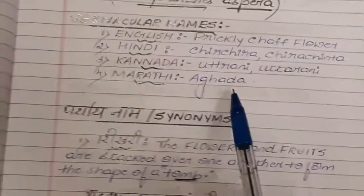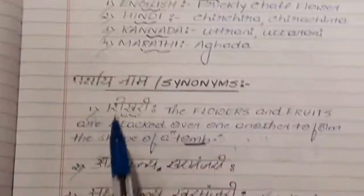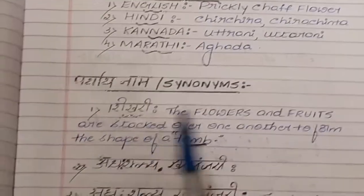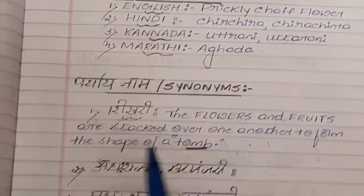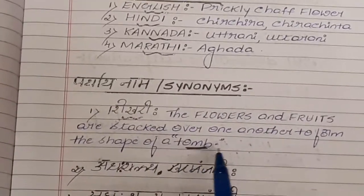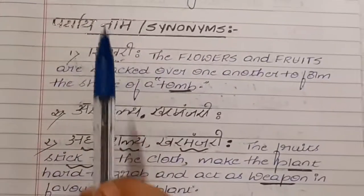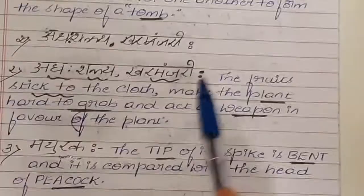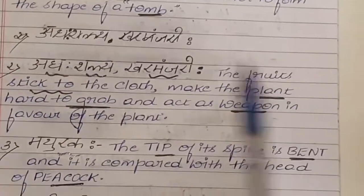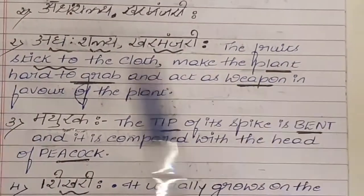In Marathi it is known as Aghada. Coming to its paryayanama or synonyms — Shikari: the flowers and fruits are stacked over one another to form the shape of a tomb, hence it is known as Shikari. Adahashalya or Karamanjari: the fruits stick to the clothes and make the plant hard to grab, acting as a weapon in favor of the plant.